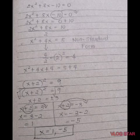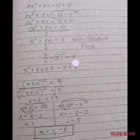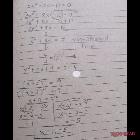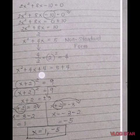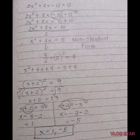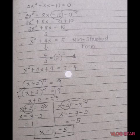Like before, get the value of b, which is 4, and divide by 2: 4 ÷ 2 = 2. Then square it: 2² = 4. Add 4 to both sides to make a perfect square trinomial: x² + 4x + 4 = 5 + 4. The factors are (x + 2)², and the right side equals 9.